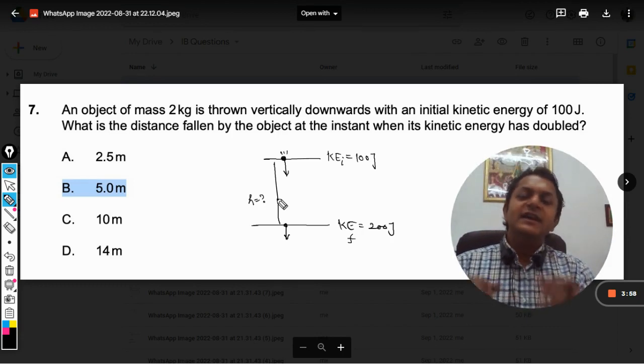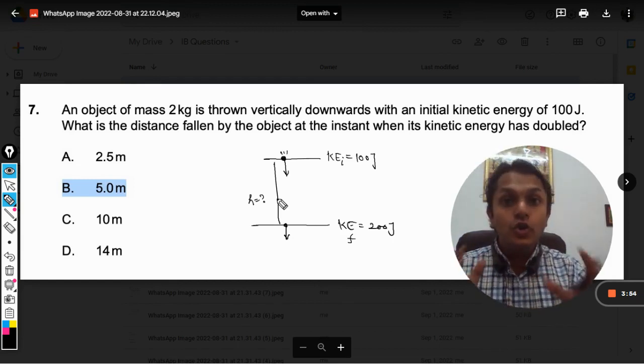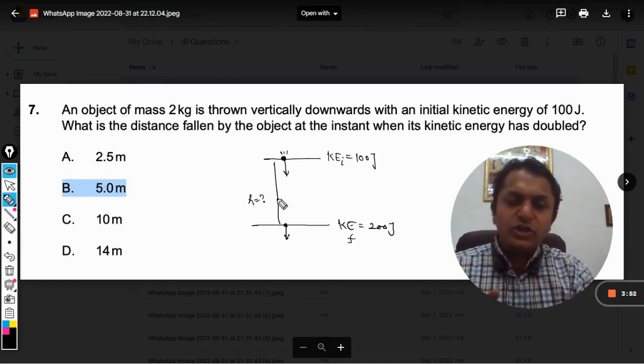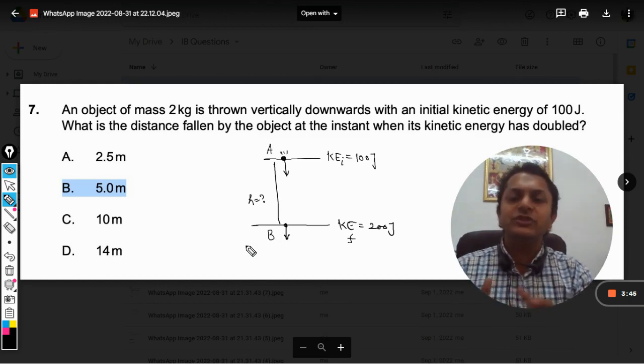So what is happening here is that gravitation is a conservative field and so no energy will be lost. The total energy at position A will always be equal to the total energy at position B.